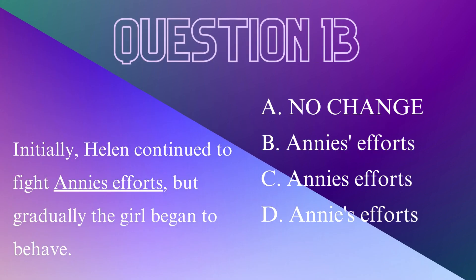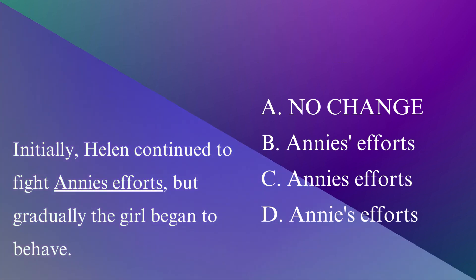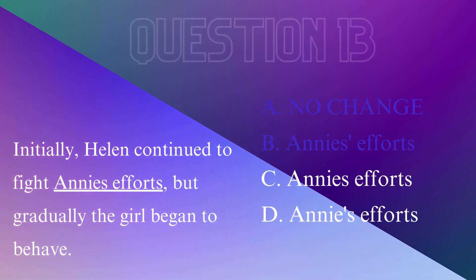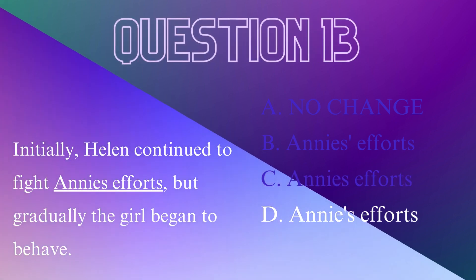Question 13. 'Initially, Helen continued to fight Annie's efforts, but gradually the girl began to behave.' Do we need an apostrophe, and if so, where? Since the efforts belong to Annie, we need to add an apostrophe S at the end of her name to show possession. Therefore, choice D is correct.